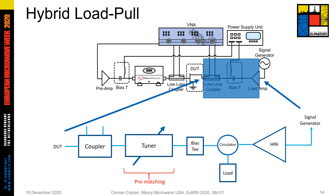A hybrid solution consists of a tuner and active load pull system. In this configuration, the tuner supports the active load pull to reduce the required tuning power by making a pre-matching between the DUT and external driver amplifier. This schematic shows how to implement a hybrid solution. In this configuration, the insertion loss between the tuner and DUT is compensated by the external amplifier. On the other hand, the tuner provides pre-matching. Therefore, it's possible to tune the impedances at the load with less power.